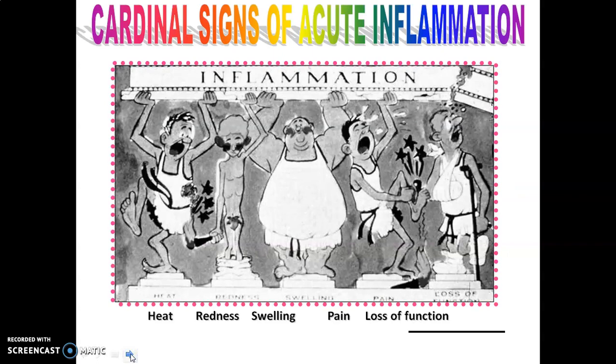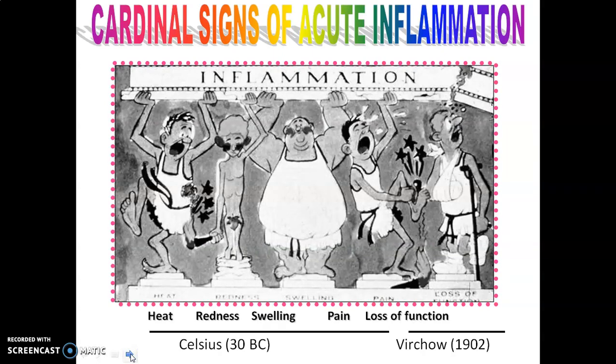There are five cardinal signs of inflammation: rubor, tumor, dolor, calor and functio laesa. Rubor means redness, dolor means pain, calor means change in temperature, and functio laesa means loss of function. Whenever there is inflammation, we can see these five cardinal signs — heat, redness, swelling and pain. These signs were introduced by Celsius in 30 BC, whereas loss of function was introduced by Virchow in 1902.